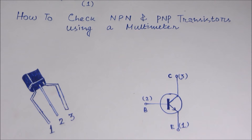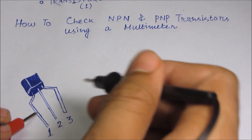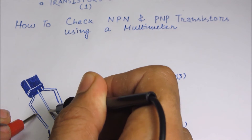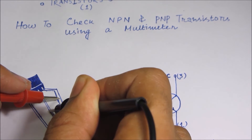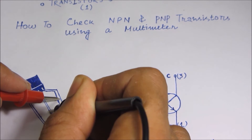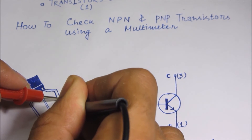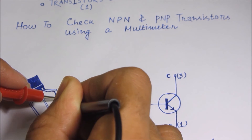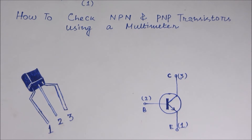If it were a PNP transistor, we can easily check it by touching the red probe on the middle terminal and the black probe on the second terminal to get some value. Doing the same with the right-most terminal — as soon as we touch the red terminal to the third leg of the transistor, we also get some value. From this we can tell that the transistor is a PNP transistor. These are the basic two differences in checking an NPN versus a PNP transistor.